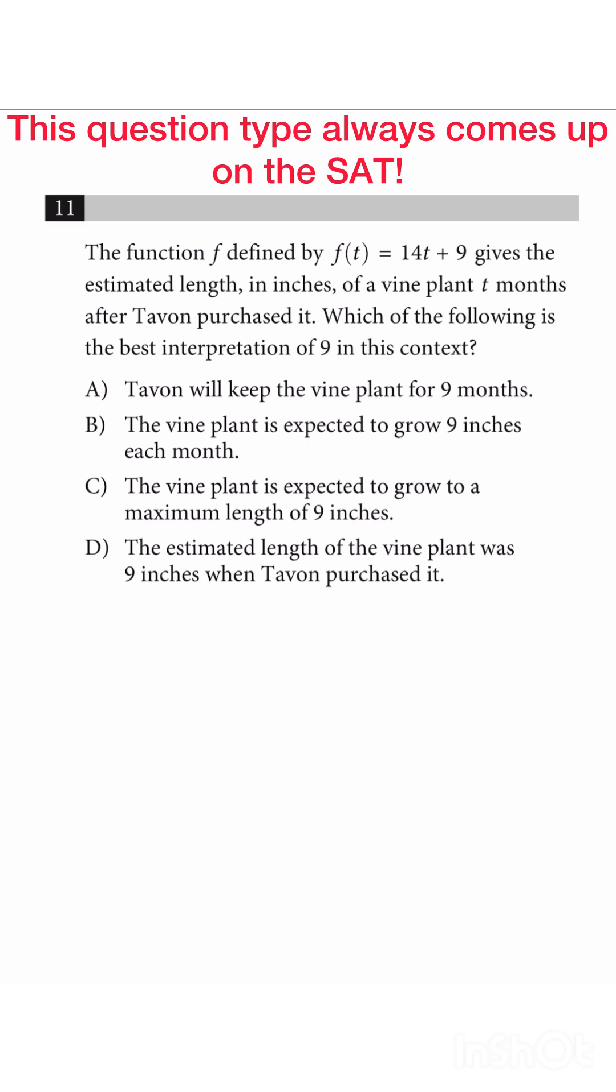The function f defined by f of x, let's say that this is x, 14x plus 9, gives the estimated length in inches of a vine plant t months after Tavon purchased it. Which of the following is the best interpretation of 9 in this context?